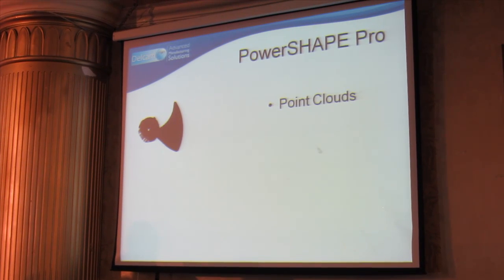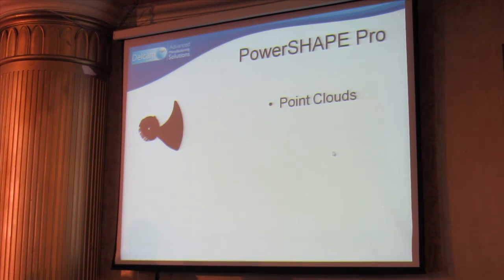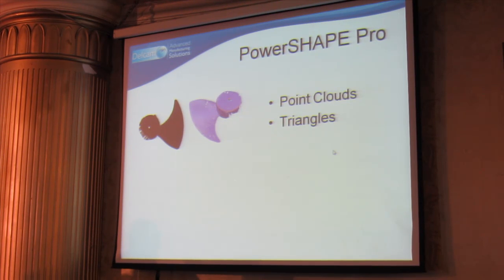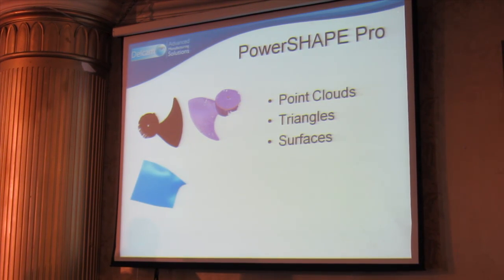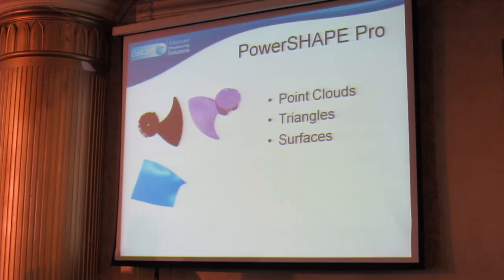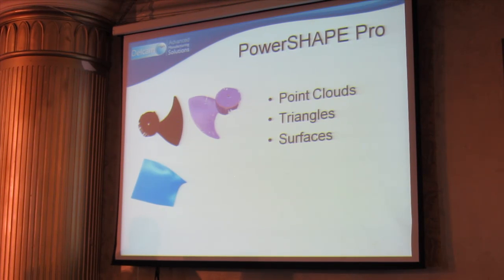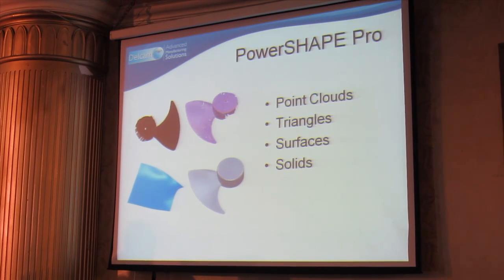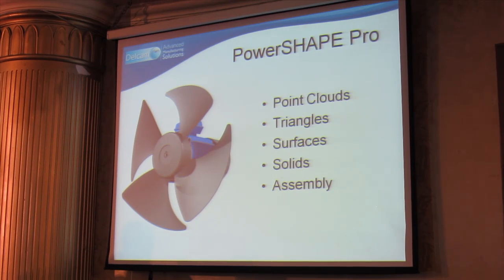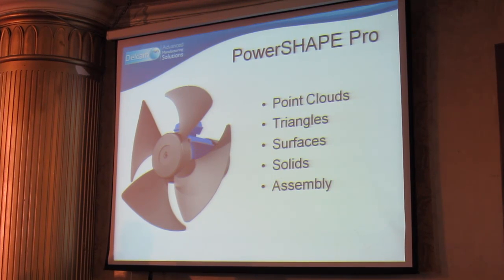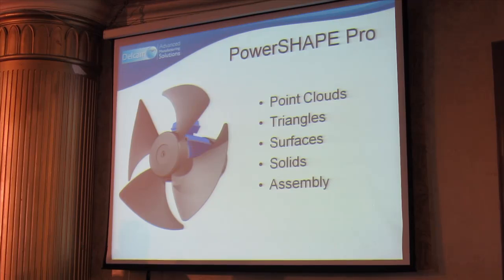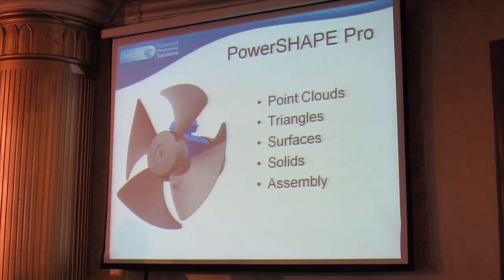In PowerShape, we're going to be using point cloud data captured from the arm. We'll convert those into triangles, then convert the triangles into surfaces, the surfaces into solids, and the whole thing will turn up into an assembly. So you can see we're using the full range of entities that PowerShape supports.